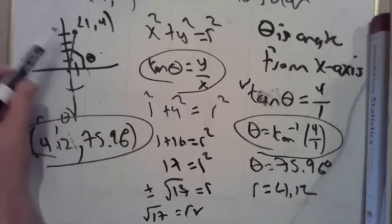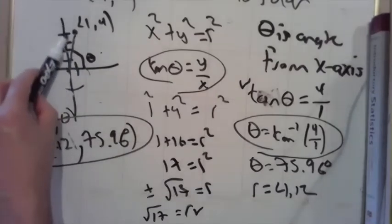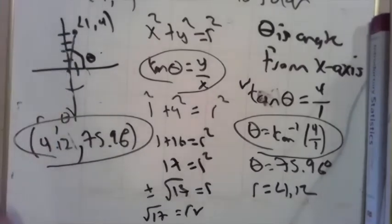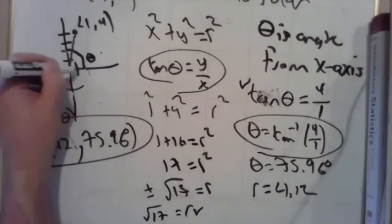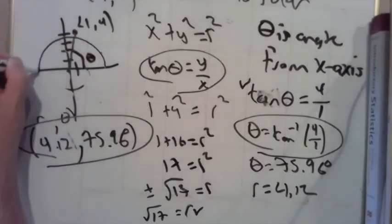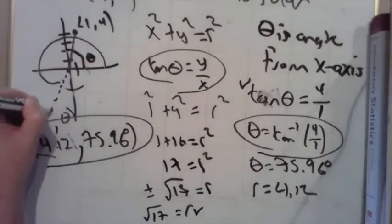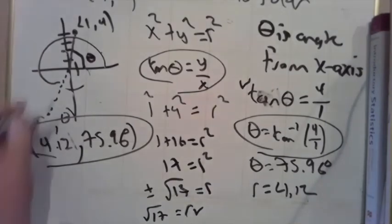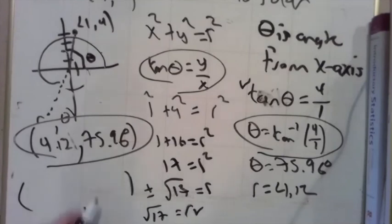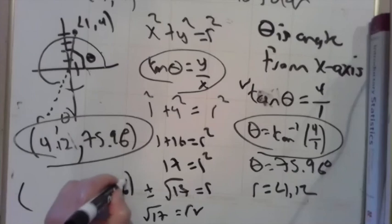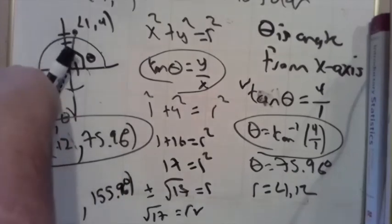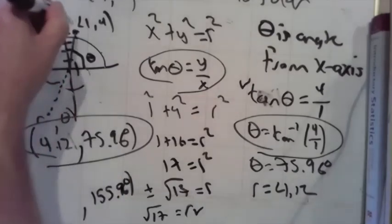So that's a rotation of 75 degrees then walk out 4.12 units. Or if I wanted to make it more complicated, it would be okay to give this angle all the way over here, so that angle plus 180. So I think that would be 155.96 degrees.